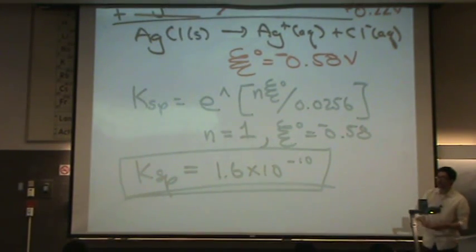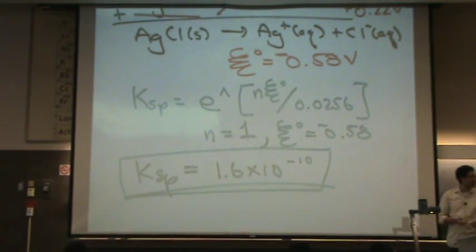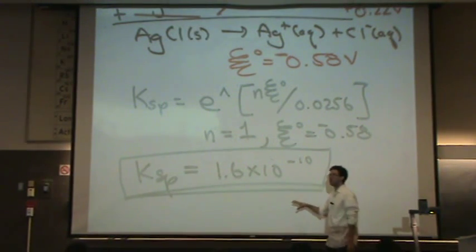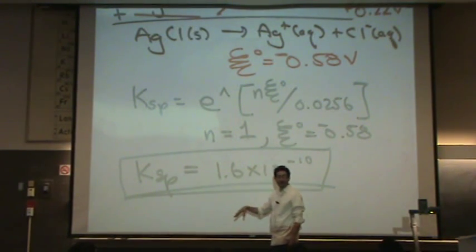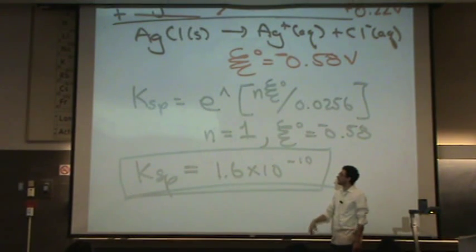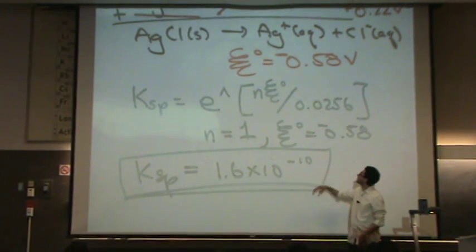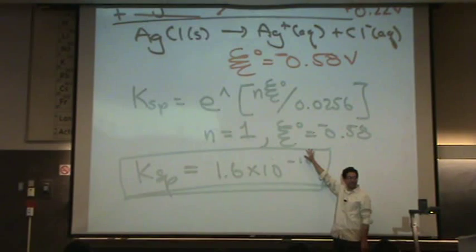Yeah, that sounds like it's not going to be very spontaneous. Or in other words, in terms of equilibrium, the reactants are favored. The products are extremely unfavored. K is really tiny. We do expect a non-spontaneous E standard.